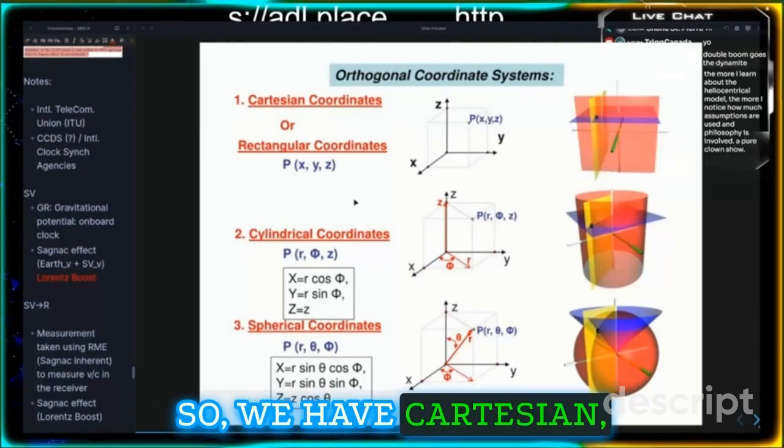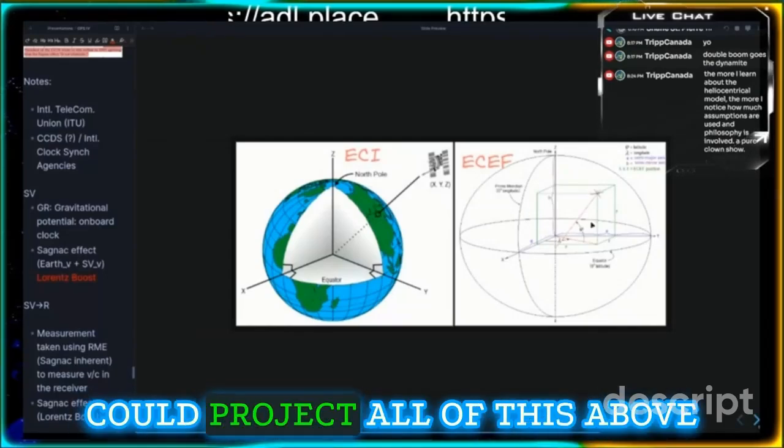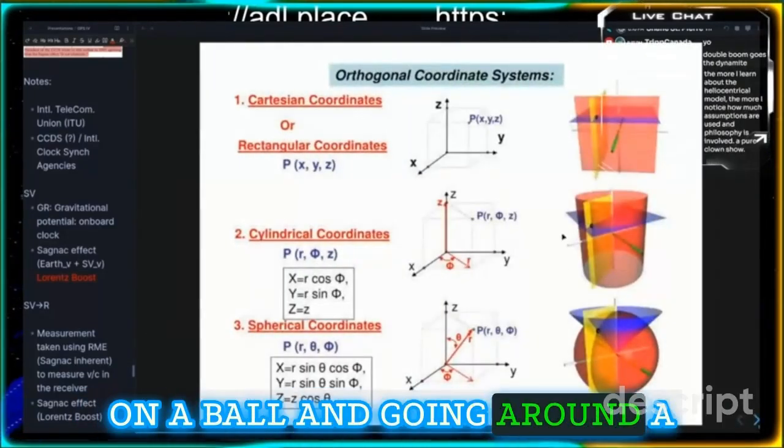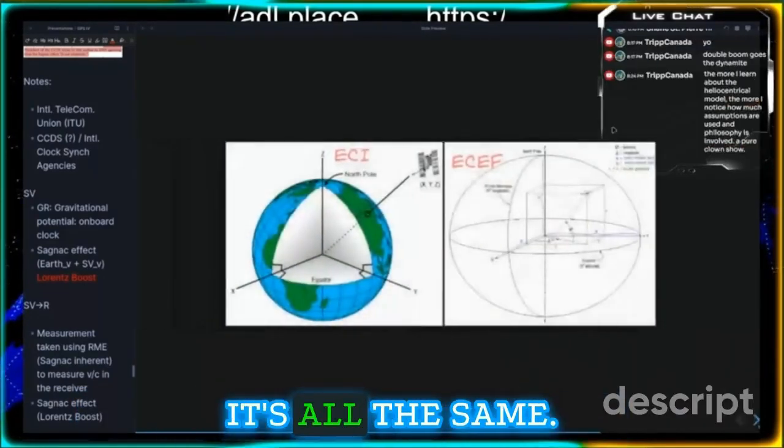So we have Cartesian, rectangular, cylindrical, spherical. If we lived on a plane, you could project all of this above us as it was happening on a ball and going around a ball, where you could have ellipses going over rectangles. It doesn't matter boys, it's all the same.